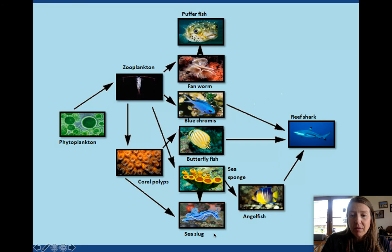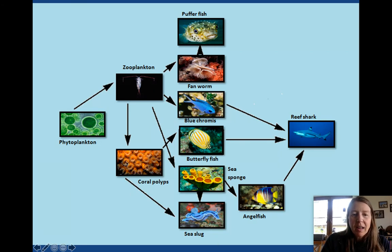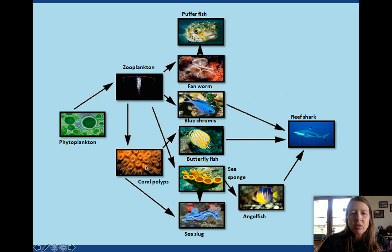Here's an example on a tropical coral reef: phytoplankton to zooplankton, and there are also coral polyps which are filter feeders. They have a nice symbiotic relationship with a lot of phytoplankton as well to get additional nutrients.